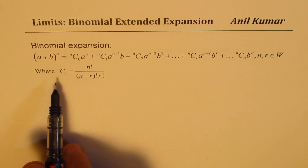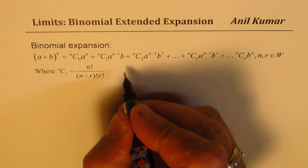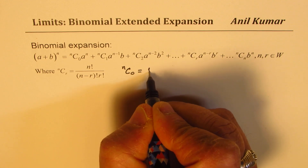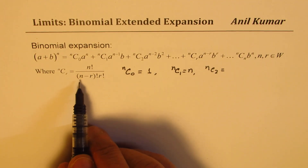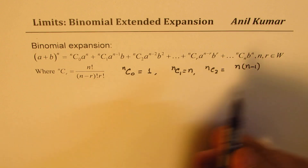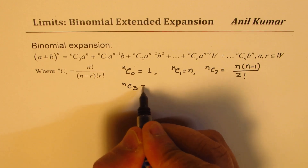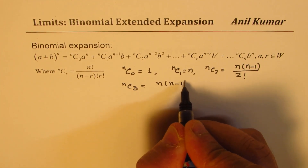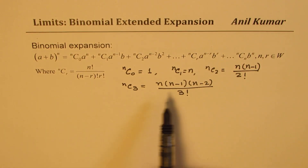The binomial coefficient n_C_r is n factorial over (n minus r) factorial times r factorial. So n_C_0 is 1, n_C_1 is n, n_C_2 is n times (n minus 1) over 2 factorial, and n_C_3 is n times (n minus 1) times (n minus 2) over 3 factorial. That is how these binomial coefficients are calculated and placed in the series.